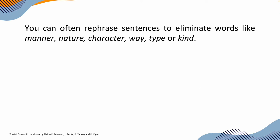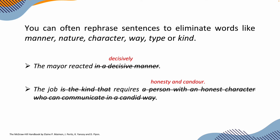You can often rephrase sentences to eliminate words like manner, nature, character, way, type, or kind. For example: 'The mayor reacted in a decisive manner' — 'decisive manner' means 'decisively,' so why have four words? So: 'The mayor reacted decisively.' Another example: 'The job is the kind that requires a person with an honest character who can communicate in a candid way' becomes simply 'The job requires honesty and candor.' That's all you need. Try to eliminate unnecessary words in your writing.